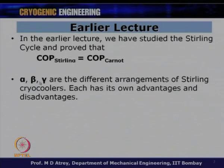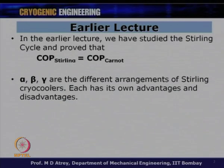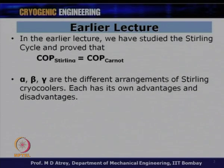We also found that alpha, beta, and gamma are different arrangements of Stirling cryocoolers, each with its own advantages and disadvantages. This classification is based upon the position or arrangement of the drive of the piston and a displacer, or a piston-and-piston arrangement used for a Stirling cryocooler.